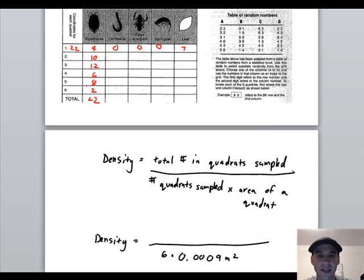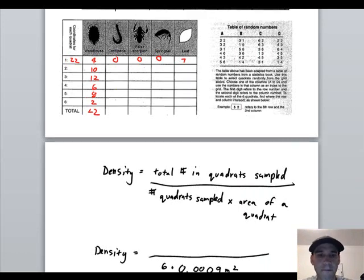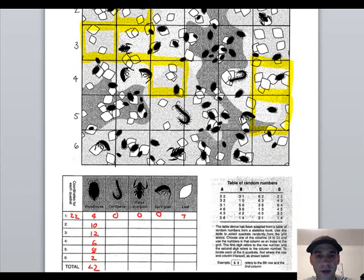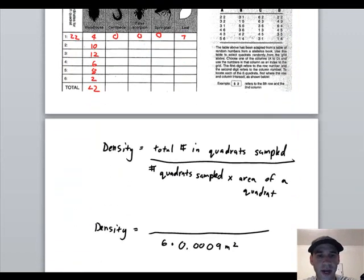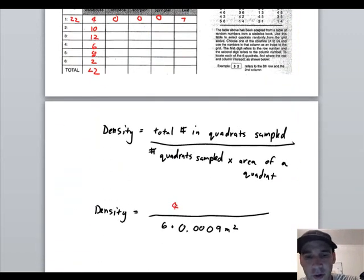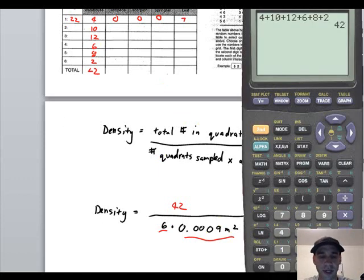If I wanted to find the density of the wood louse over those 6 quadrats, which represents the density within this whole leaf litter community because this is my representative sample, I would take 42, which is the total number that I had in the ones I sampled, divided by the number that I sampled, which was 6, times the area of each of those, which is 0.0009. So I'd have 42 divided by 6 times 0.0009.